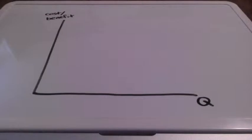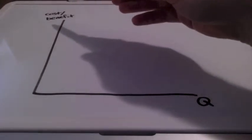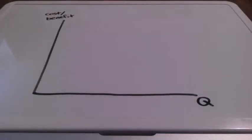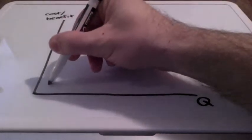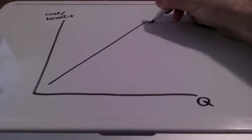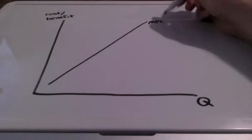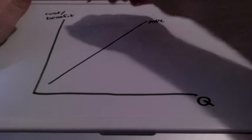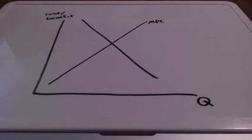In this lesson, we're going to take a look at negative externalities. We have costs and benefits for the vertical axis and quantity for the horizontal axis. When an individual or firm makes a decision and doesn't have to pay the full cost of the decision, this is called marginal private cost, and marginal private cost represents the supply curve, so it is upward sloping.